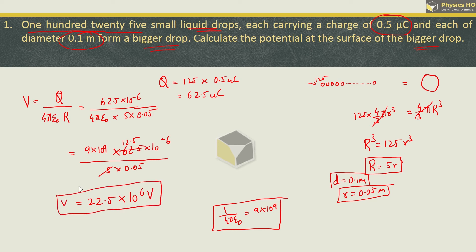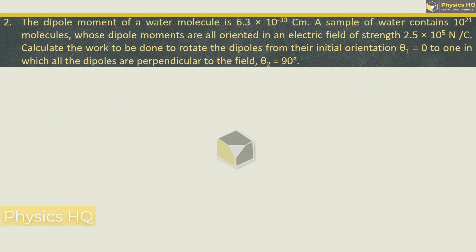I hope you all understood this. Next, let us look at the next sum. The dipole moment of a water molecule is 6.3 into 10 raised to minus 30 coulomb meter. A sample of water contains 10 raised to 21 molecules whose dipole moments are all oriented in an electric field of strength 2.5 into 10 raised to 5 newton per coulomb. Calculate the work to be done to rotate the dipoles from their initial orientation of theta equal to 0 to where all dipoles are perpendicular to the field, that means theta 2 is 90.